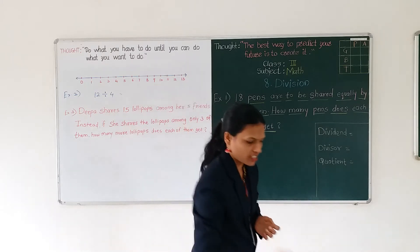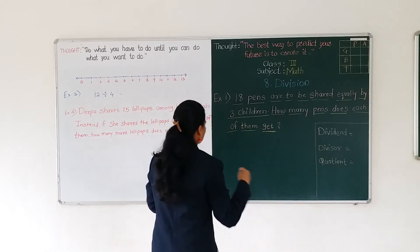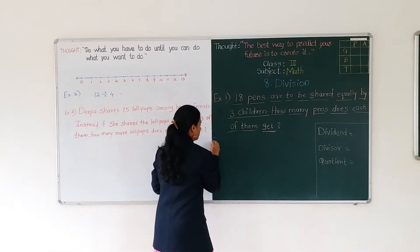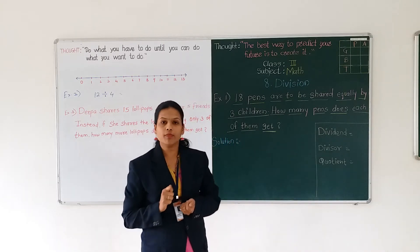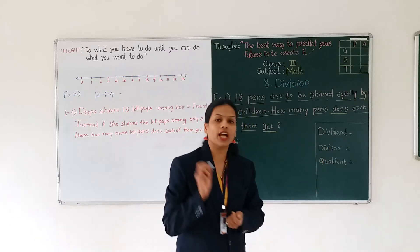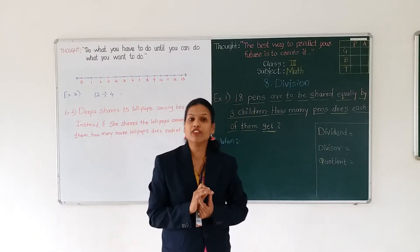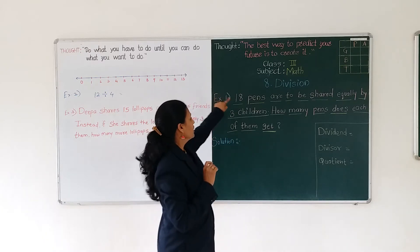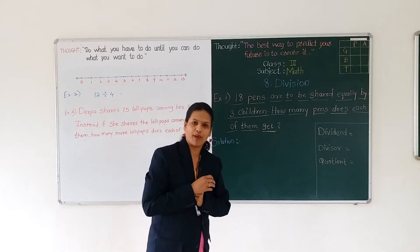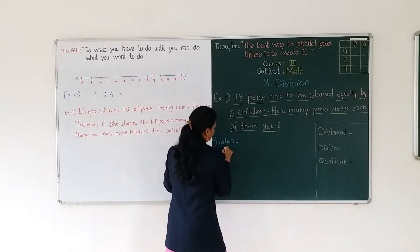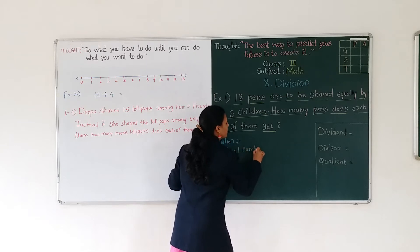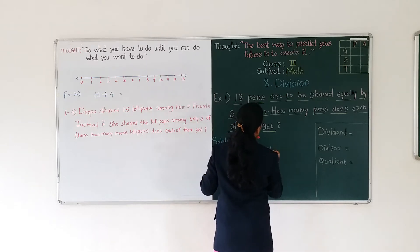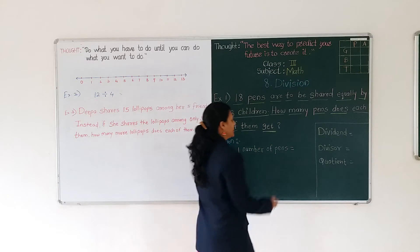And how to solve? First, write down the solution. This is a word problem, so first we have to mention what they have given. First, they have given the total number of fans. Total number of fans — how many fans are there? 18 fans.